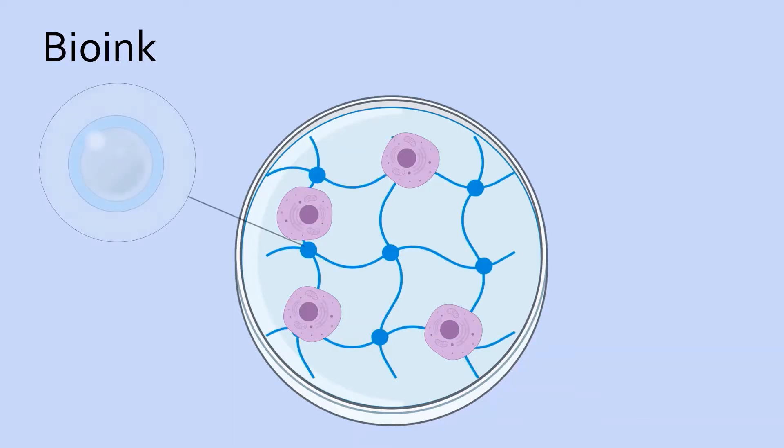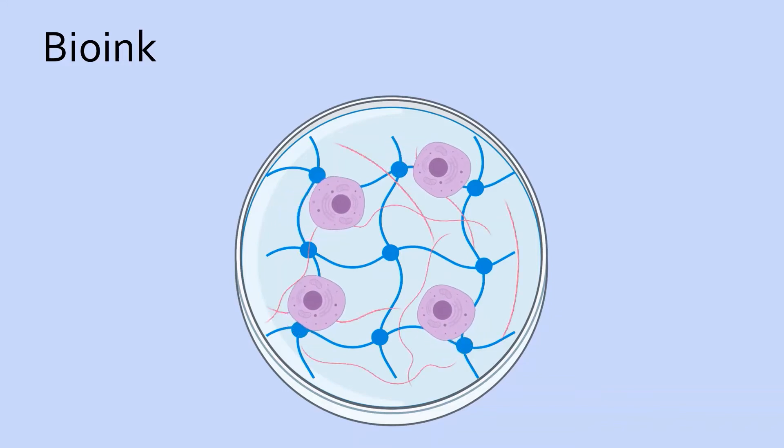Bioink is one of the most important parts of the 3D bioprinting process. It starts with the cells that were extracted. Then, molecules called hydrogels are added to provide water for the cells. Other nutrients and chemicals are added so that the cells can grow and communicate as if they were in a living body.